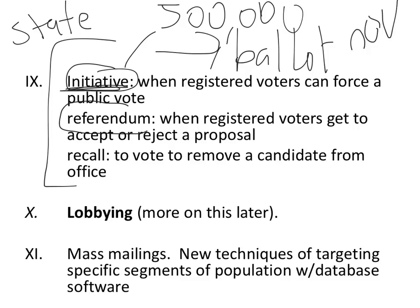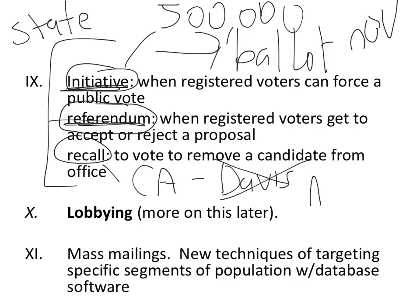A referendum is whenever registered voters get to accept or reject a proposal — for example, California allowing people to vote directly on gay marriage instead of passing a law. A recall is the idea that you could remove a candidate from office by putting it up to a vote. California did this, removing Governor Gray Davis and replacing him with Arnold Schwarzenegger.